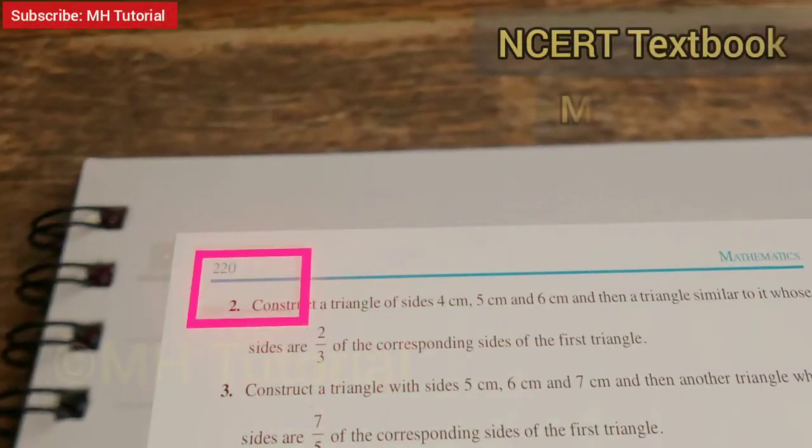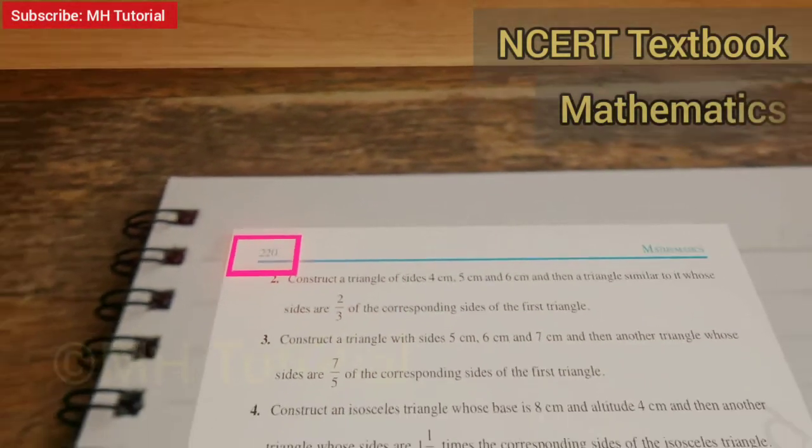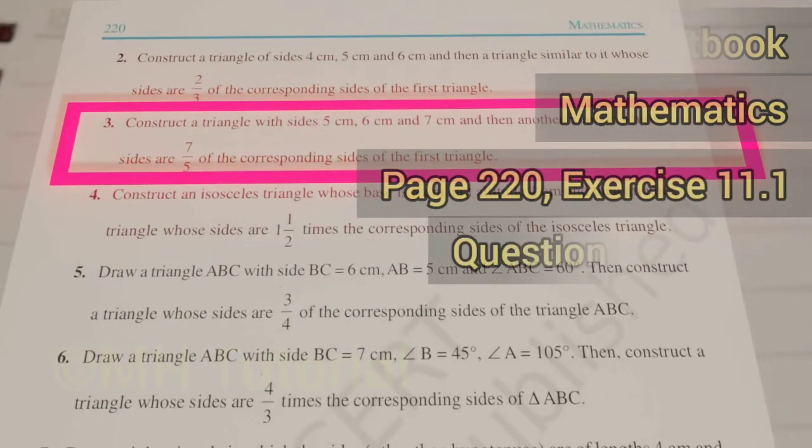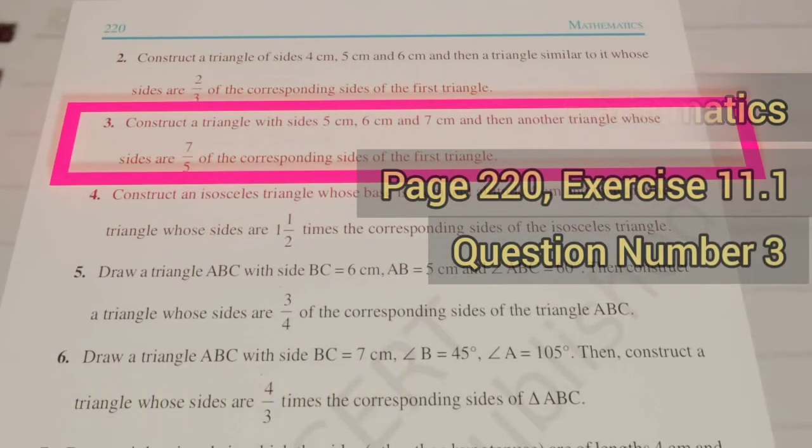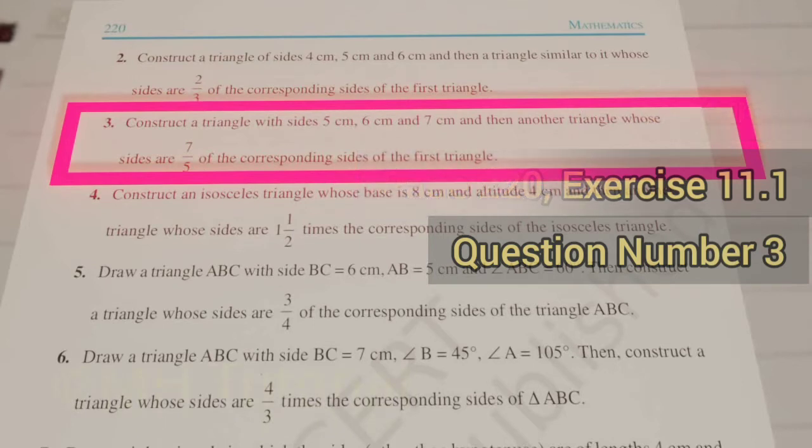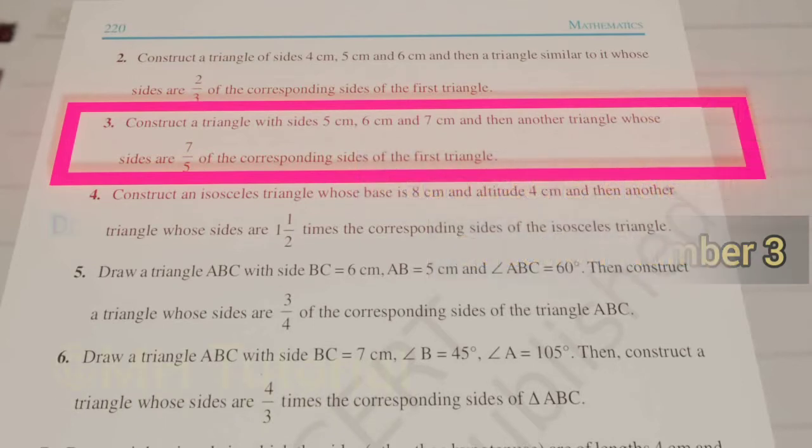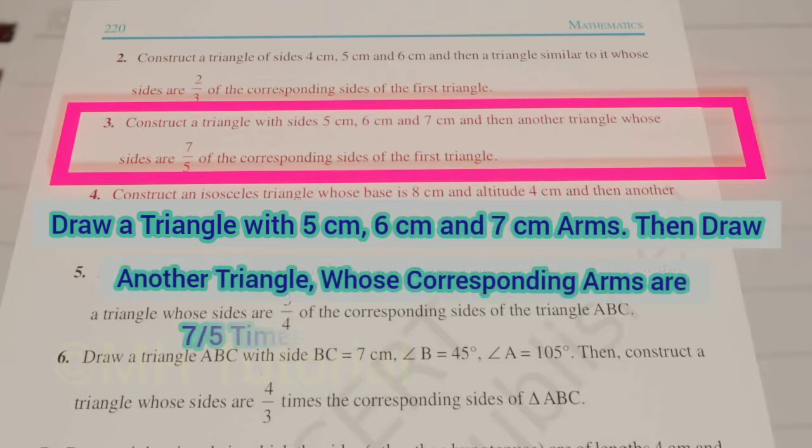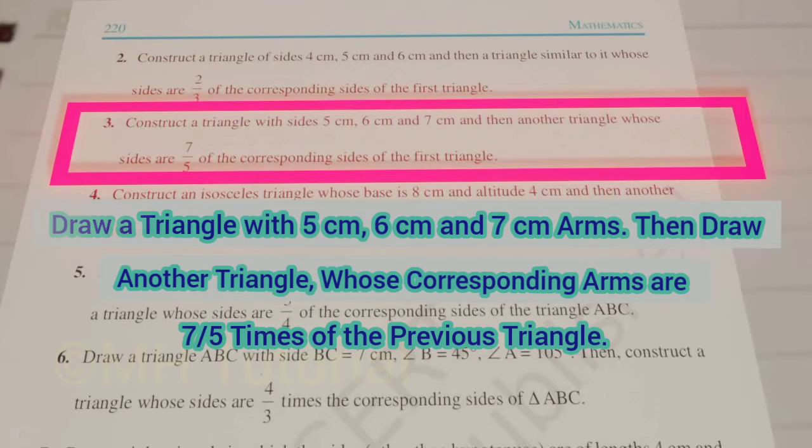The question discussed here is adopted from NCERT's 10th grade math textbook. It is mentioned on page number 220, Exercise 11.1, Question number 3. The statement of the question is: Draw a triangle with 5 centimeters, 6 centimeters and 7 centimeters arms, then draw another triangle whose corresponding arms are 7 fifths times the arms of the previous triangle.